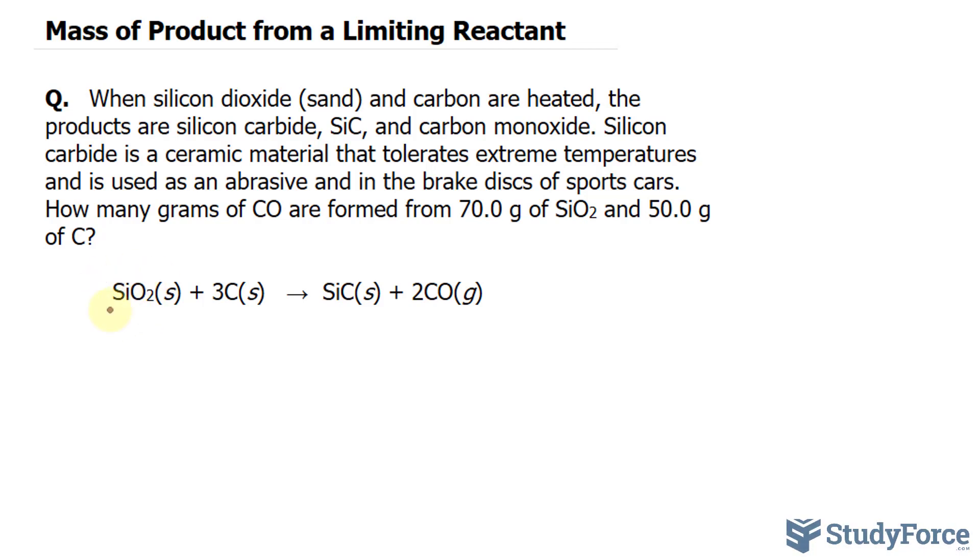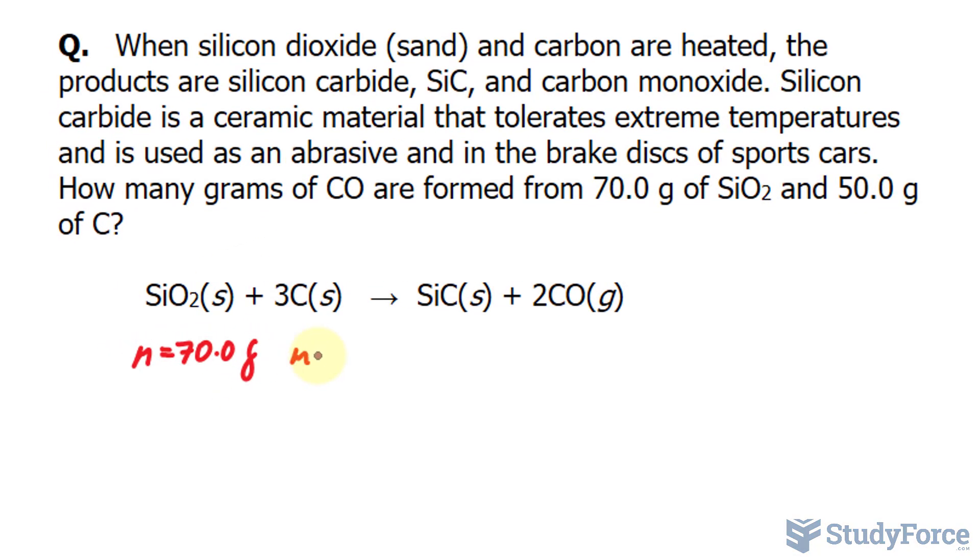Let's begin by organizing our work. We are told that we have a mass of silicon dioxide that is 70.0 grams and a mass of carbon that is 50.0. What we want to find out is the mass of CO and which of these two is the limiting reactant. To do this, we'll need the number of moles for each of these, which I'll represent by the letter N. We'll also need the molar mass, I'll represent that by two little m's.